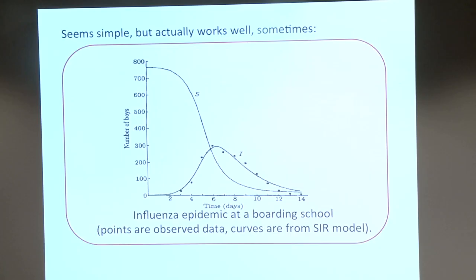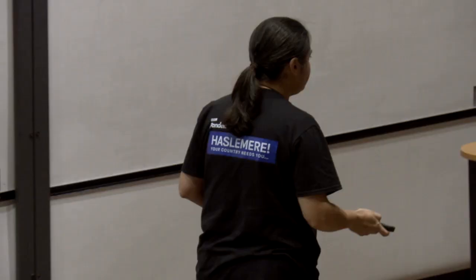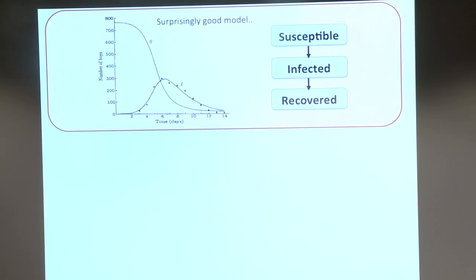You might think this is so simple it literally can't fit anything. The classic example is this influenza epidemic at a boys boarding school — the axis is number of boys, starting at 763. The dots are the observed numbers and the curves are the best-fit SIR model. It's not perfect but it's not bad for something with only two parameters — nearly everyone gets infected, but not literally everyone. From this model you can also gain insights on R-naught, the reproduction ratio, and the vaccine coverage needed to protect against a particular disease.